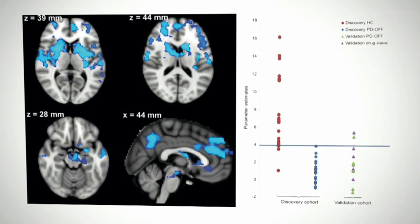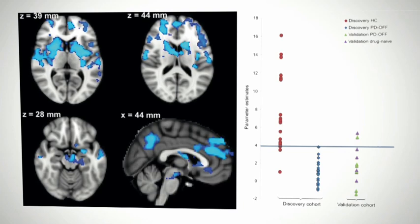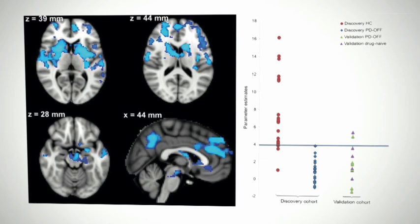For example, a potential biomarker for Parkinson's was found using resting state, where patients showed reduced functional connectivity with the basal ganglia network in a wide range of regions.